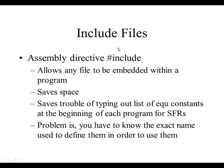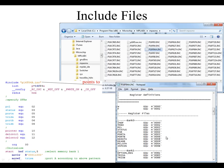Include files. The assembly directive include allows any files to be embedded within a program. This saves space. It saves the trouble of typing a list of equate constants at the beginning of each program for your special function registers. The problem is you have to know the exact name used to define them in order to use them.